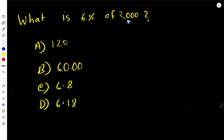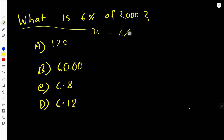What is 6% of 2000? To solve this, we need to translate this sentence: 'what' means X, 'is' means equal sign, then 6%, 'of' means multiplication sign, then 2000. Here, the percentage sign means 1 over 100.